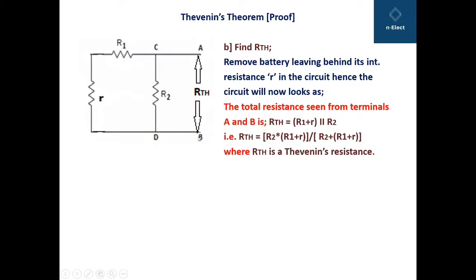We now calculate the total resistance seen from terminals A and B. Starting from A and moving to B, we encounter two branches: one branch contains R1 and r in series, and the second branch is R2. Therefore R1 and r in series are in parallel with R2.